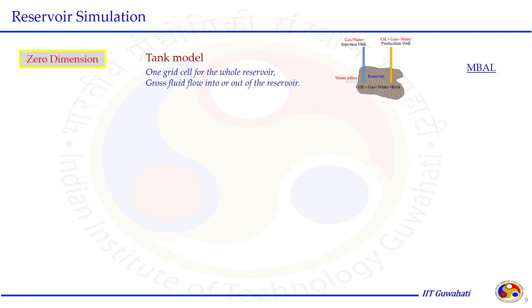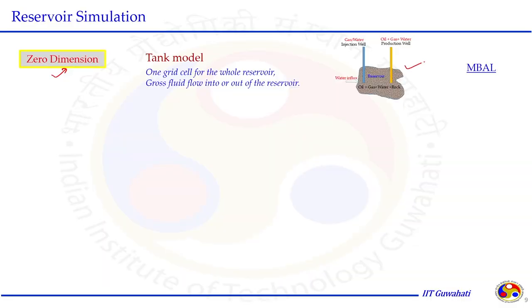Some reservoir simulation cases we discussed earlier — not in computational language but in simpler terms — can also be simulated in computer models. For example, the zero-dimensional model, also called the tank model, uses one grid cell for the whole reservoir. It considers fluid in a tank where, due to pressure difference, fluid is produced. We do not consider the flow equation — just the fluid within the tank volume at time t after production. This can be simulated with dedicated software called MBAL. We can also write our own model equations to understand the primary recovery mechanism.